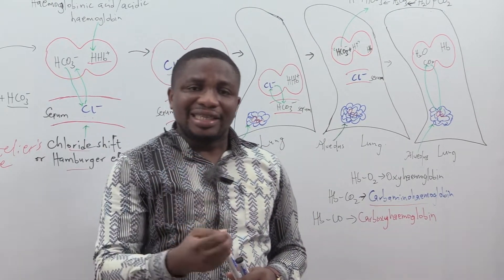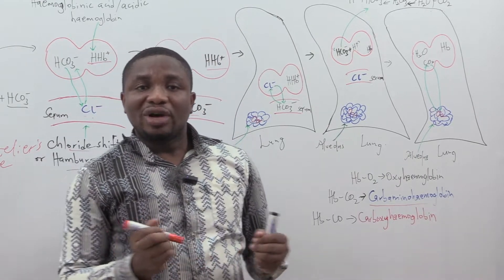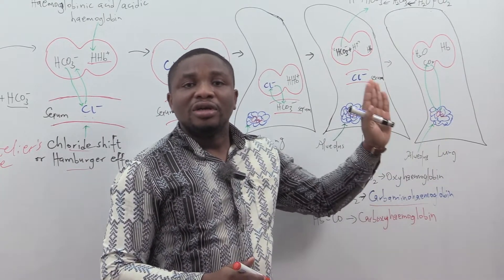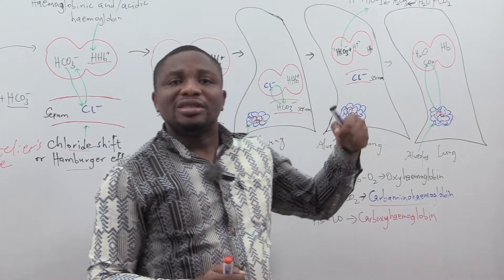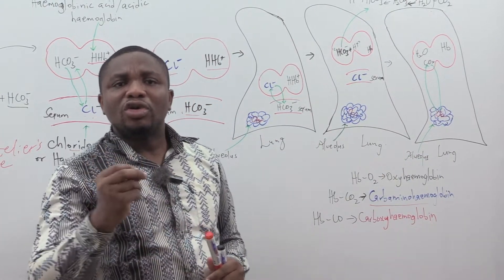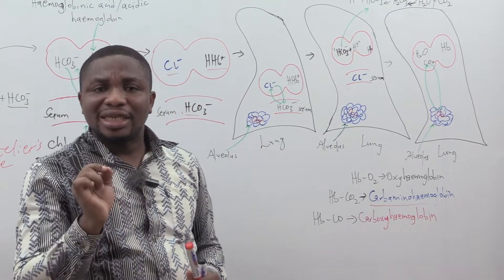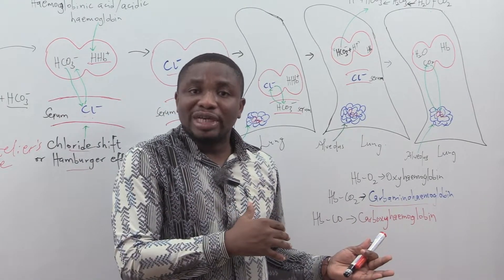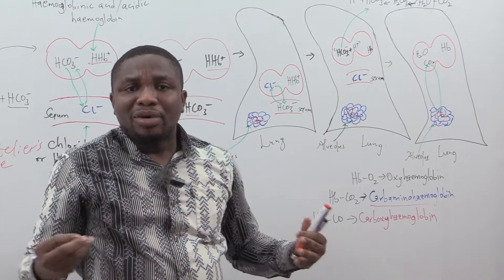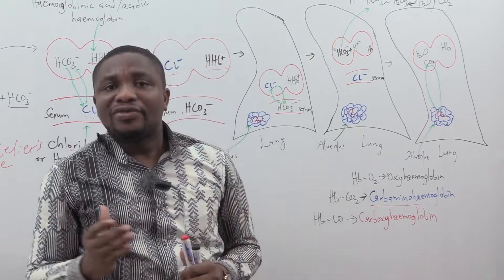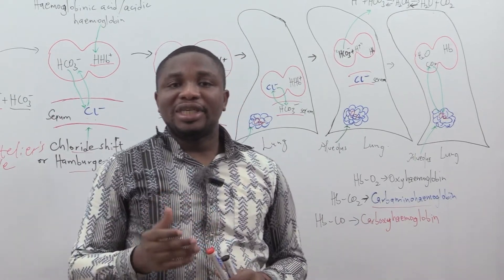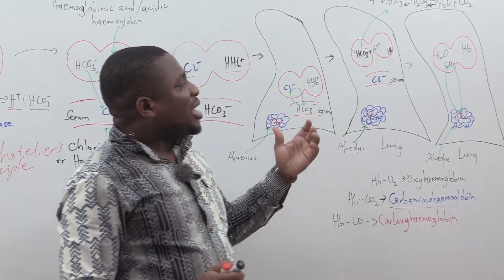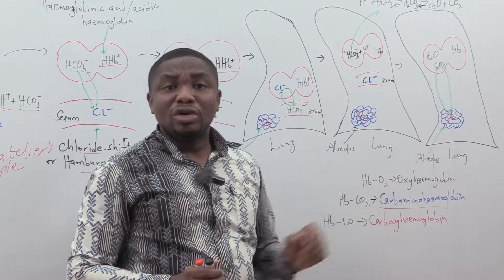The reason hemoglobin's affinity for carbon dioxide decreases in the presence of high oxygen concentration is that high oxygen causes hemoglobin to become acidic. When hemoglobin is acidic, its affinity for carbon dioxide is reduced, the bonds become weaker, and the CO₂ is easily dissociated and excreted by expiration.